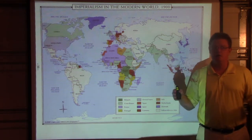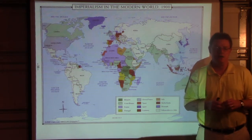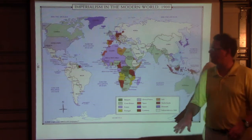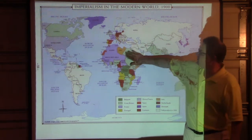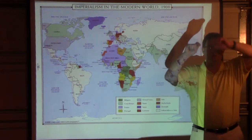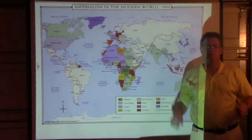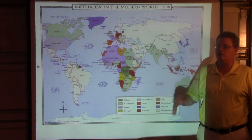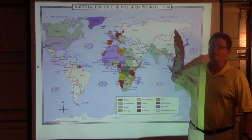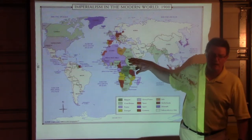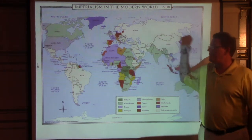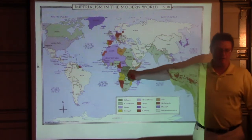European countries, because of technology, could colonize anywhere — it doesn't even matter if it's useful. France will capture part of the Sahara Desert, and everyone else will say, 'there's nothing there but sand.' France gobbled it up simply because they could, and that way their competitor couldn't have it.